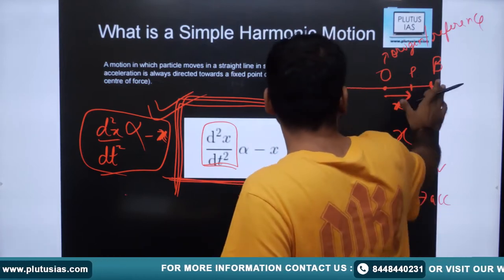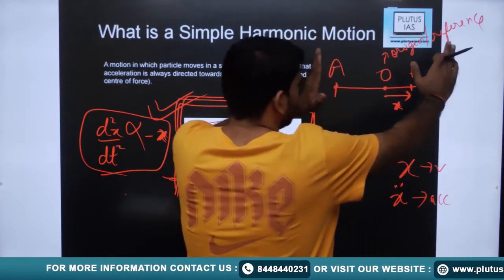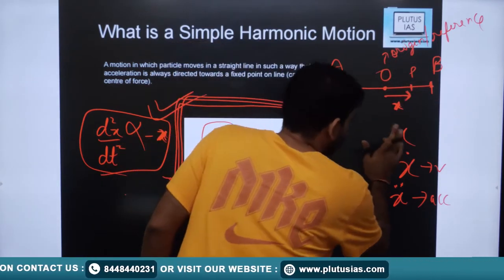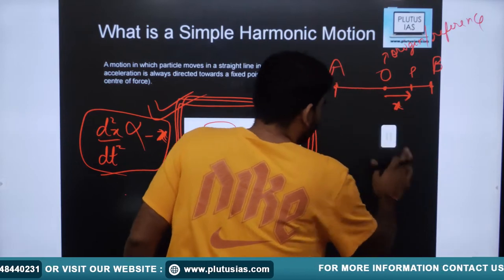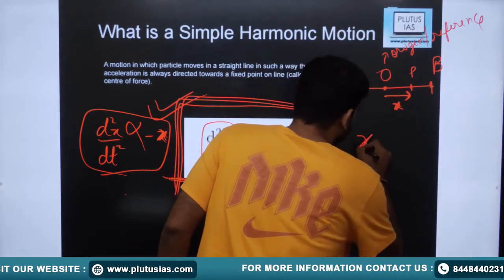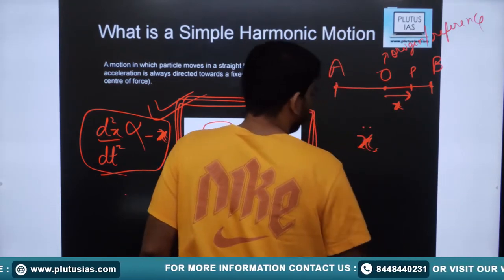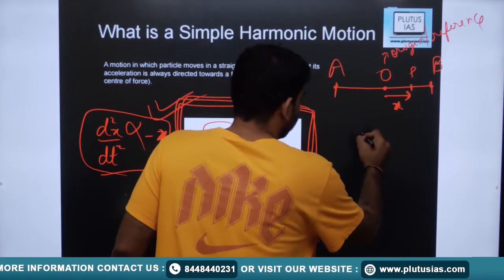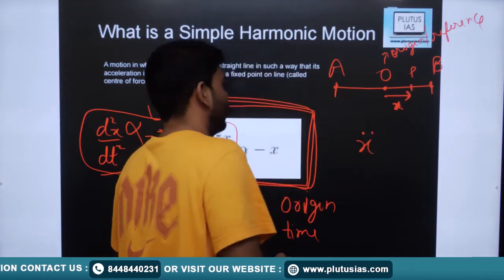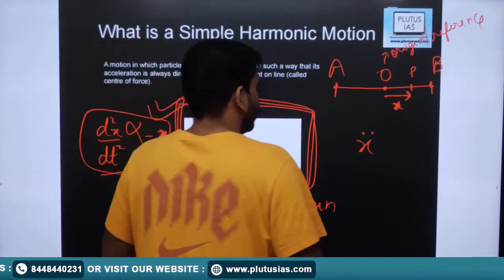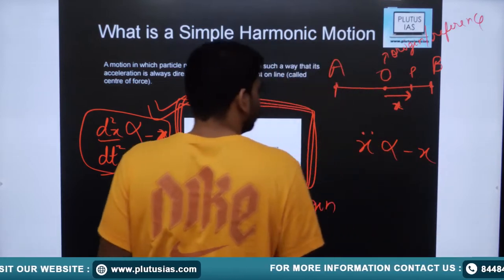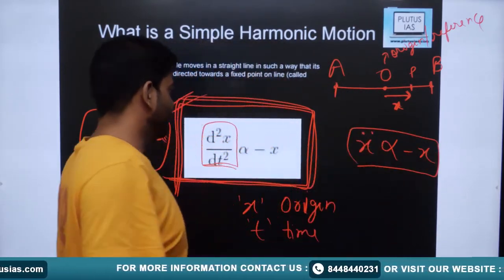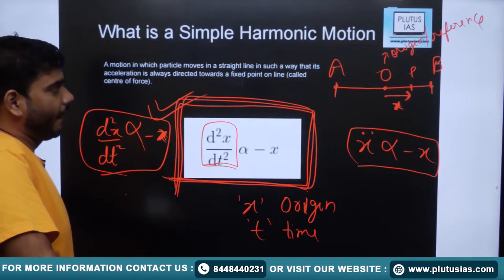Let us define a path where A and B are two nodes — the endpoints or bounding points between which the particle is oscillating. Let the midpoint of line AB be O, our reference point. Distance x is measured from this reference point. At some arbitrary time t, the particle is at point P, and x equals distance OP. This particle oscillates between the two nodes A and B.